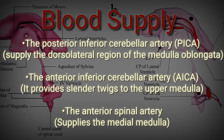Arterial supply: the vertebral basilar system is responsible for supplying the medulla oblongata with arterial blood. The posterior inferior cerebellar artery is a branch of the vertebral artery before it gives its contribution to the anterior spinal artery. It provides direct branches that supply the dorsolateral region of the medulla oblongata.